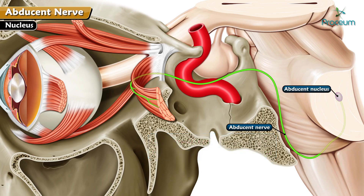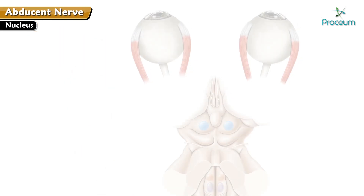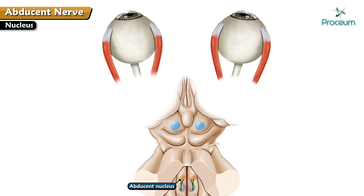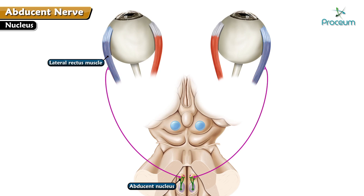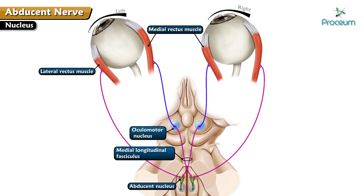Nucleus. The nerve gets its origin from the abducens nucleus, which is located in the lower part of the pons, deep to the facial colliculus in the floor of the 4th ventricle. The nerve cell bodies in the abducens nucleus are of two types: the large-sized typical motor neurons supply the lateral rectus muscle, and the small-sized interneurons, whose axons ascend in the contralateral medial longitudinal fasciculus and end in the oculomotor nucleus — the part which supplies the medial rectus of the contralateral side. These connections ensure coordinated conjugate movements of the right and left eyes.